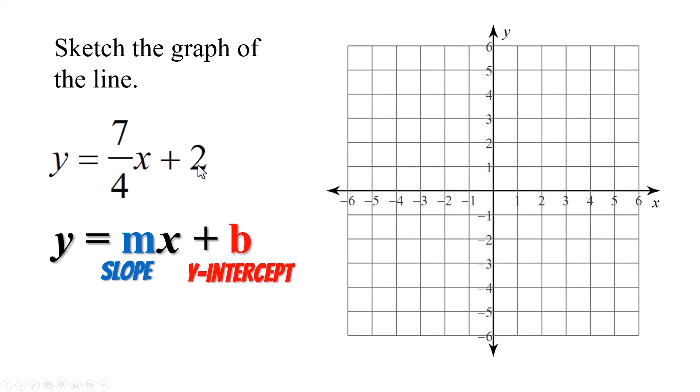Plus 2 is our y-intercept. Plot that first. Your slope is 7 fourths. This means you're supposed to go up 7 over 4. Okay, 1, 2, 3, 4, and I am fully not off the graph but completely off the screen. You're not going to be able to see where that point's going to be. So you have to know how to graph backwards.